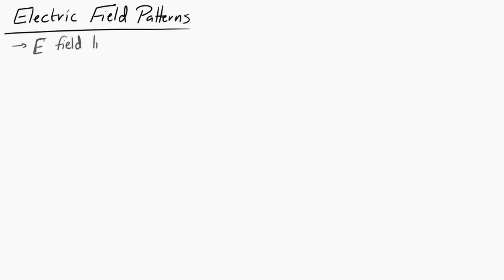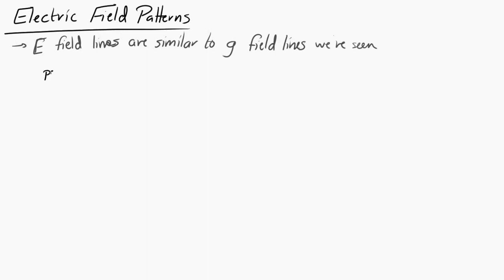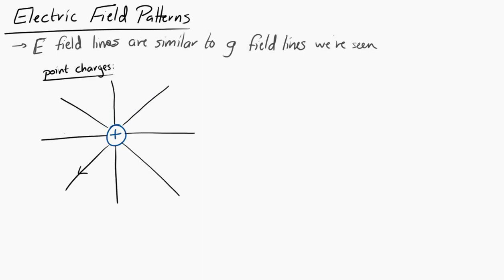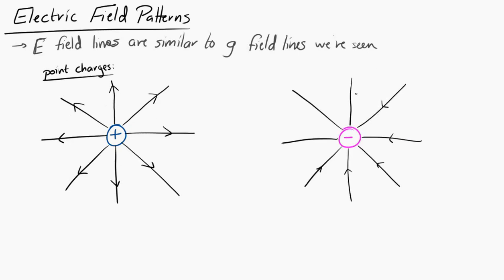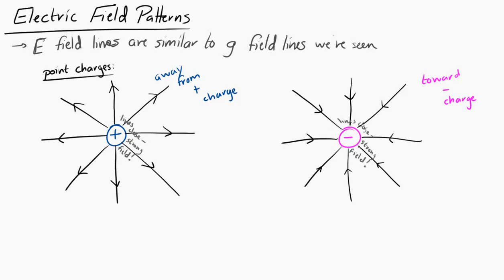Now let's draw a couple of electric field line patterns, which are very similar to gravitational field lines. Around a single positive charge, the electric field points away from the charge; around a single negative charge, it points toward the charge. Just like with gravitational field lines, when electric field lines are closer together the electric field is stronger — so the field is stronger closer to the charges.